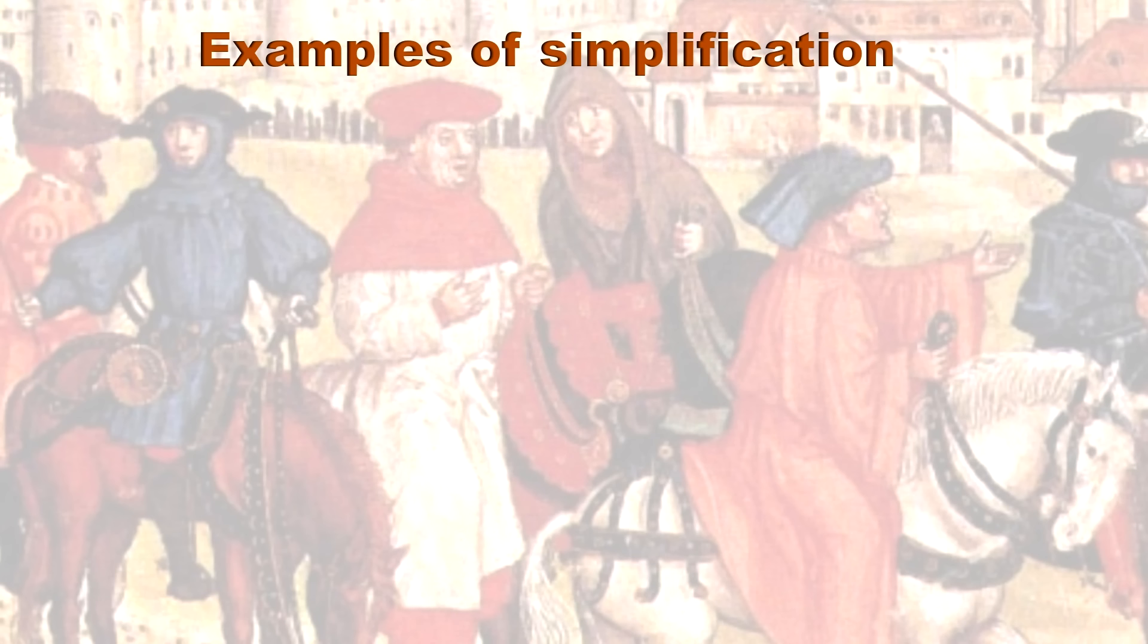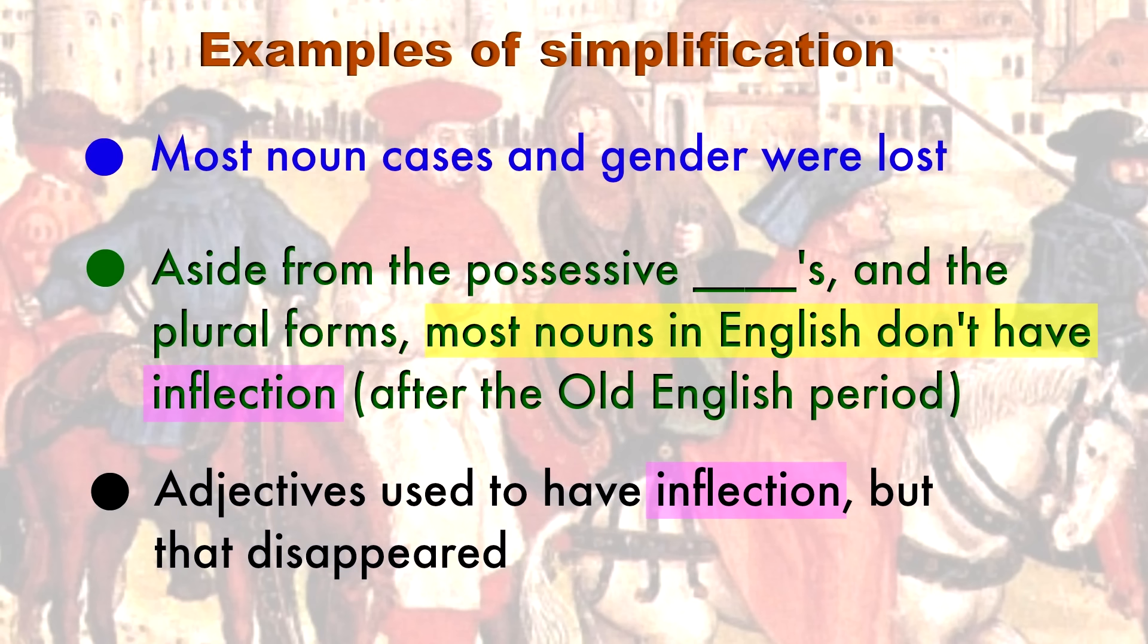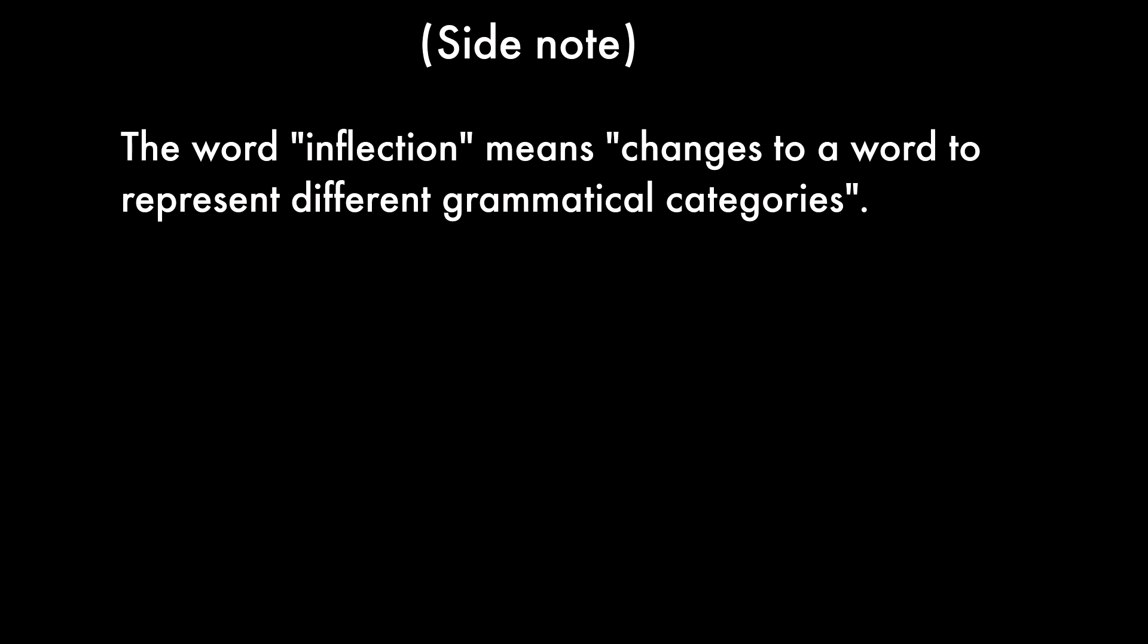There was a lot of simplification, like the loss of most noun cases and gender, so that aside from the possessive form with apostrophe s and the plural forms, most nouns in English don't have any inflection. Also, adjectives used to have inflection, but that disappeared too.